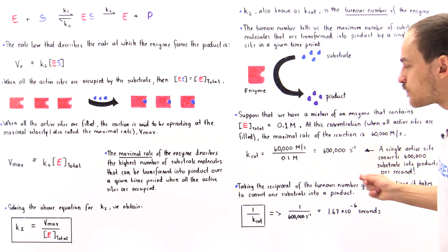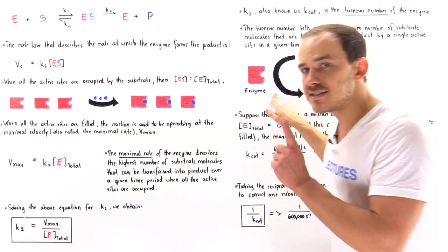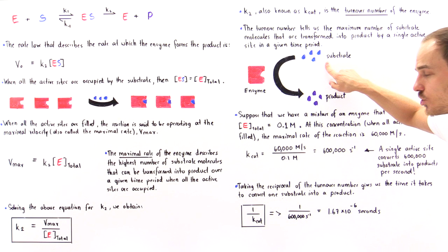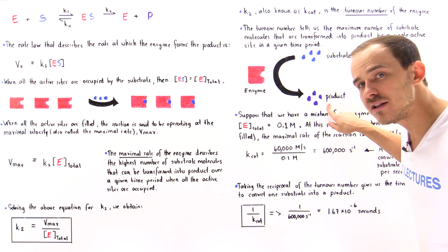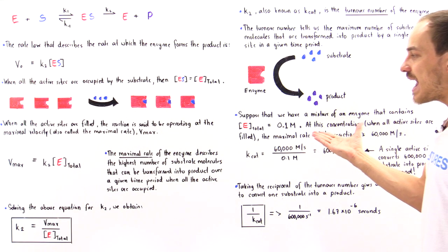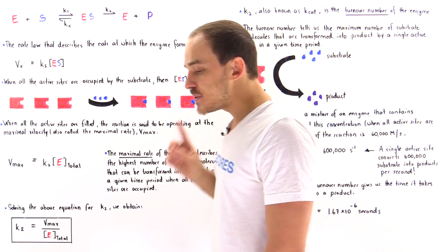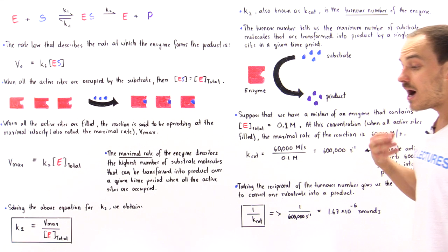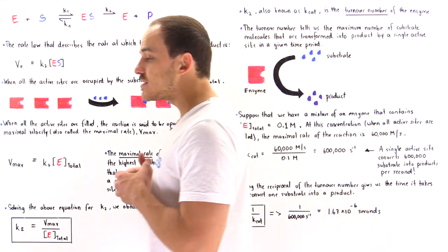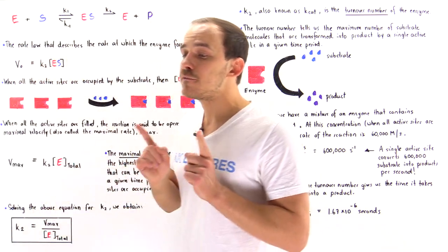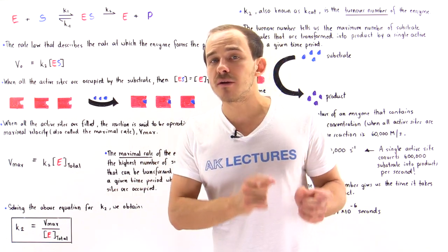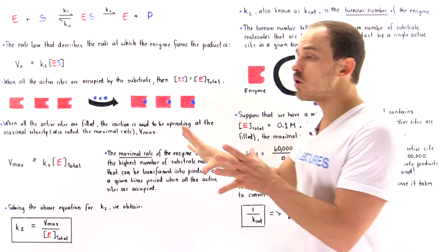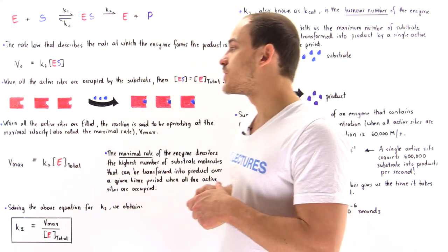This result tells us that a single enzyme with a single active site can transform 600,000 substrate molecules into 600,000 product molecules every second. This is actually a description of carbonic anhydrase — one of the quickest enzymes in our body, found inside red blood cells, which transforms the nonpolar CO₂ molecule into the polar bicarbonate ion, allowing us to store and transport CO₂ from cells and tissues to the lungs.